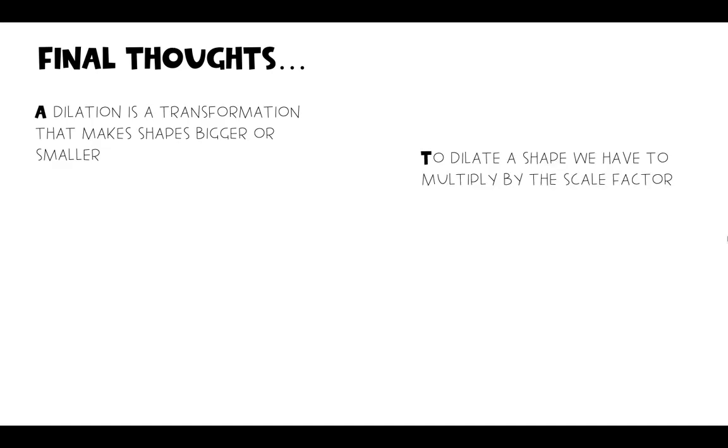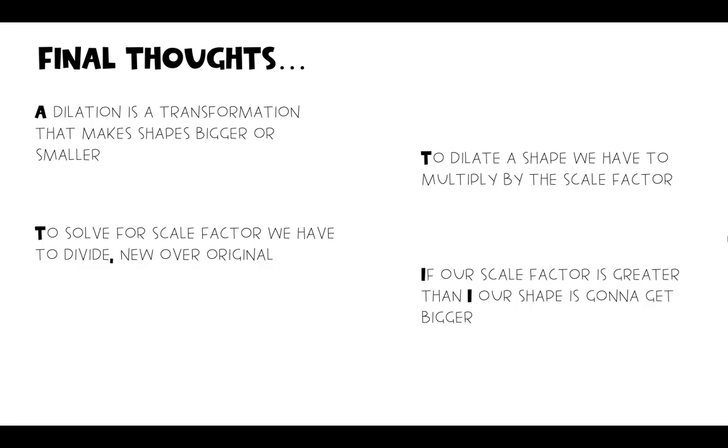We have some final thoughts now that we've gone over scale factor. So a dilation is a transformation that makes shapes bigger or smaller. It's all about changing the size. To dilate a shape, we have to multiply by the scale factor. In order to get scale factor, we have to divide new over original or image over pre-image. If our scale factor is greater than one, our shape is going to get bigger. And if our scale factor is less than one, our shape is going to get smaller.